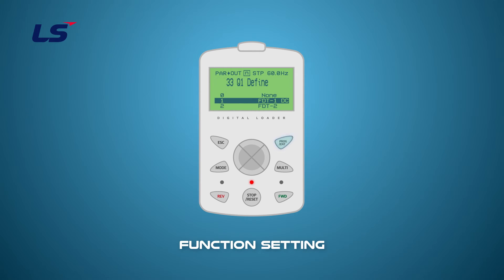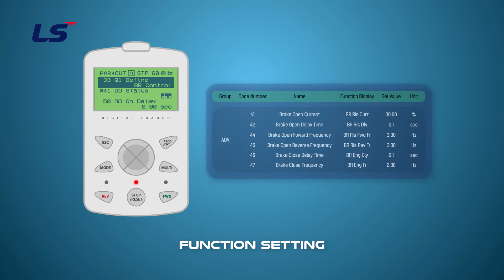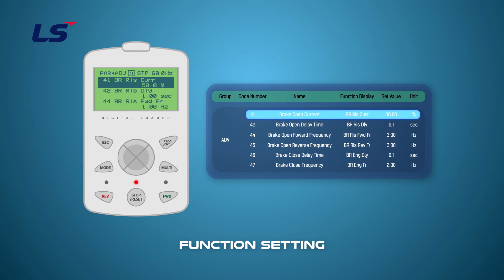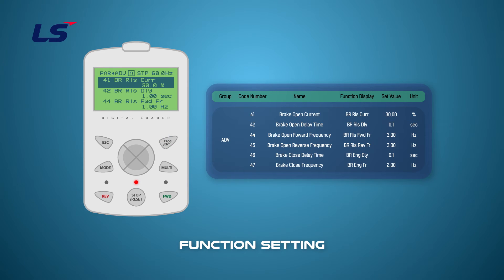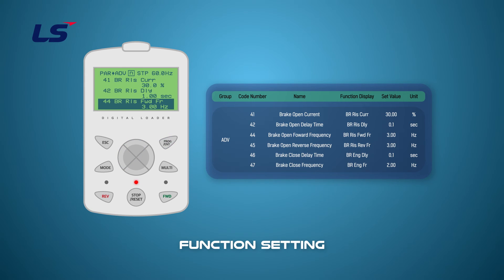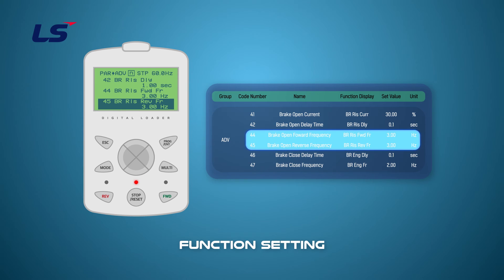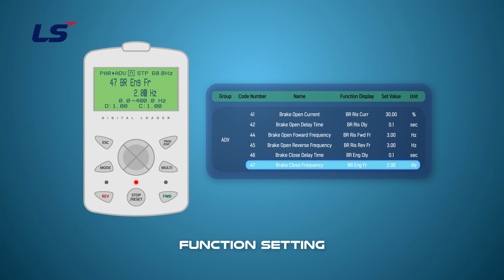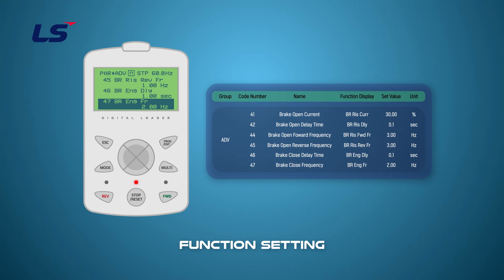Set 35 BR control for the output at outgroup 33 Q1 define. The BR control function sets the open-close frequency and the open current. ADV41 brake open current is the value based on the rated current of the motor. Similar to setting outgroup 57 FDT frequency, set the brake open frequency at ADV44 and ADV45, and set the close frequency of the brake at ADV47 in deceleration of motor.